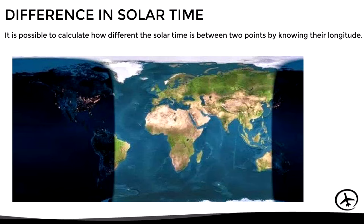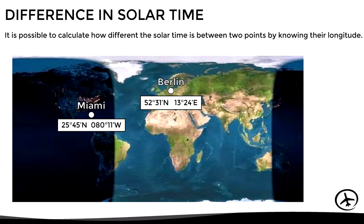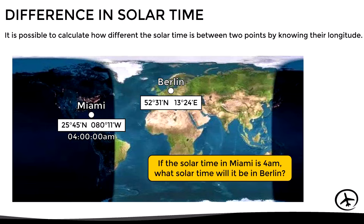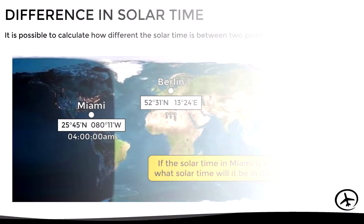Let's see the following example. Here we have the coordinates for the cities of Miami and Berlin. If the solar time in Miami is 4 a.m., what solar time will it be in Berlin?